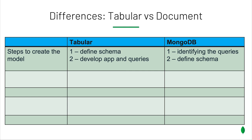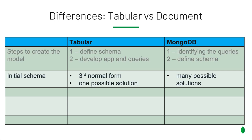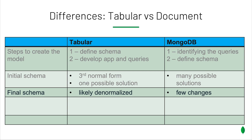If you were going to create a schema for tabular databases, the first thing you would do is get in a room, define your schema, then go write the app and write the queries. As for MongoDB, as we've seen, it's important to really understand the workload first — so we identify the query, then define the schema. We're basically inverting those two main steps. The initial schema for a tabular database tries to respect the third normal form, giving you one possible solution. With MongoDB, there could be many possible solutions, which is why it's important to understand the workload.